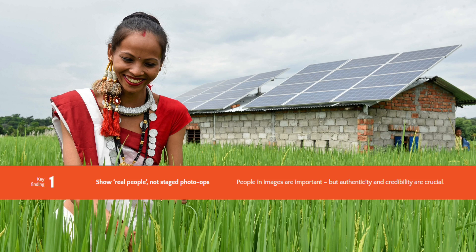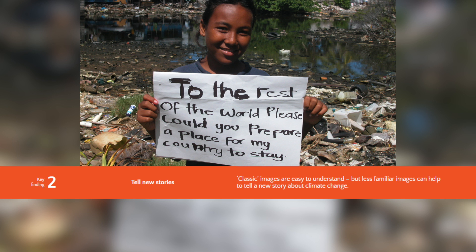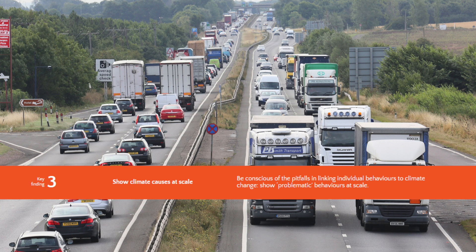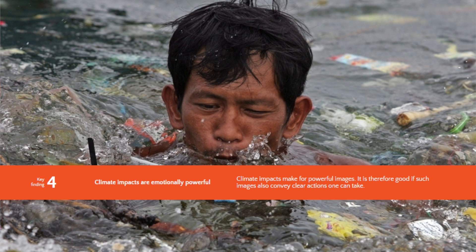So we created Climate Visuals to deal with this problem. We carried out our own research in three different countries — the UK, Germany, and the US — surveying over a thousand people in each country and carrying out discussion groups in the UK and Germany. Once we'd analyzed the data, we produced seven core principles for more effective visual climate change communication, which are the center of the Climate Visuals approach.